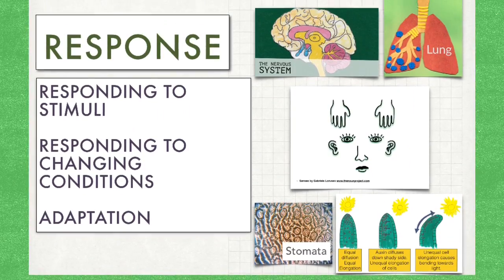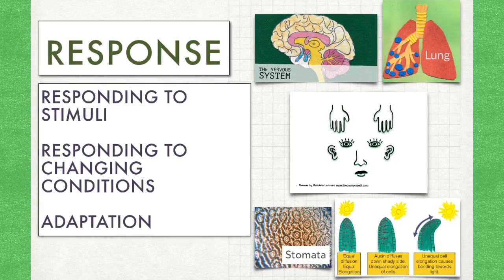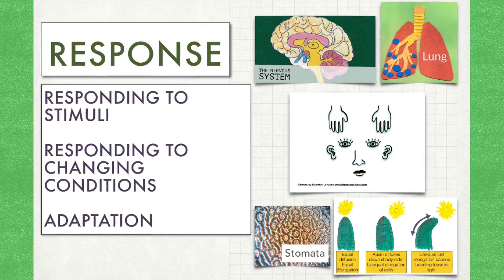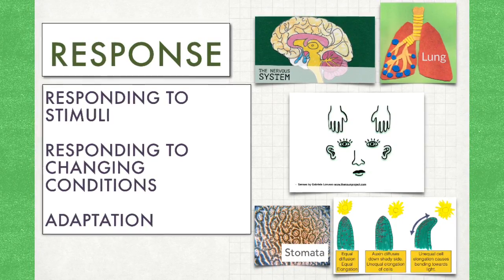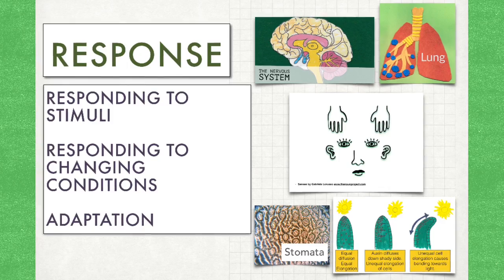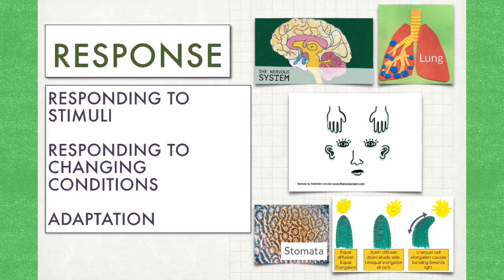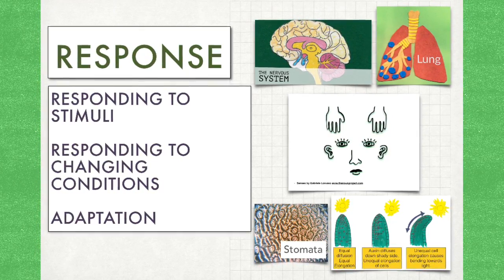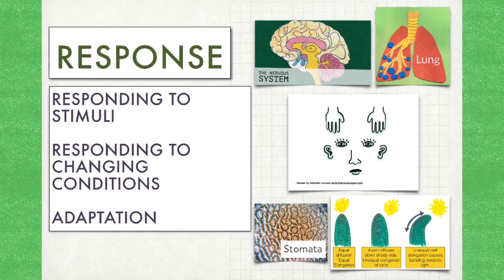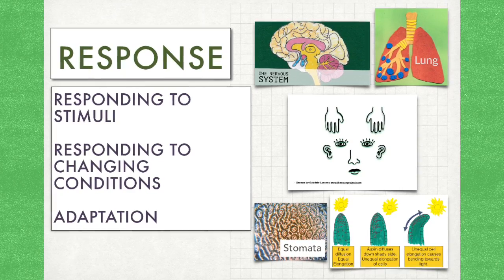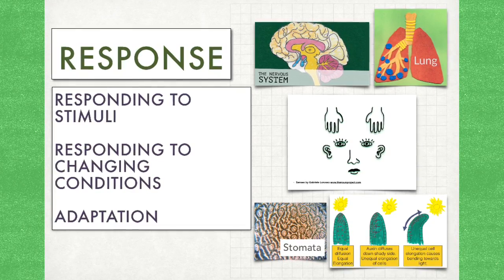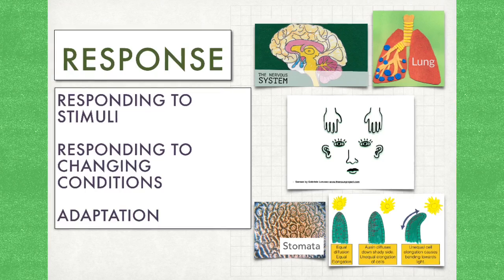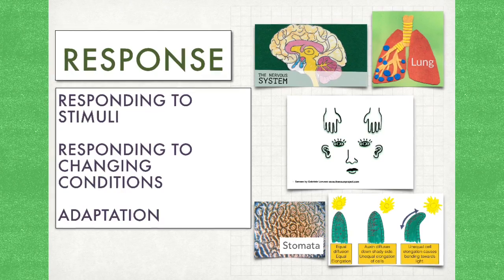The next characteristic is response. Living things respond to stimuli — they respond to changing conditions, and this enables them to adapt. Our sense organs and nervous system are amazing at picking up and responding to changes in our environment. It's not just animals; plants can respond as well — they can open and close their stomata, grow towards light, etc.